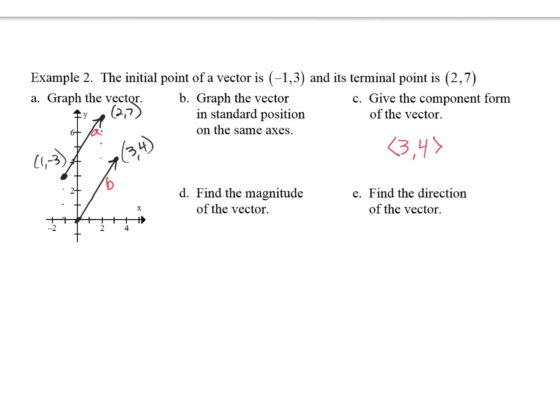Part D says find the magnitude of the vector. The one in standard form is easier — if you draw the right triangle, you can see the sides are 3 and 4. It gets you directly to Pythagorean's theorem: square root of 9 + 16. It's a 3-4-5 triangle. So our magnitude is equal to 5.